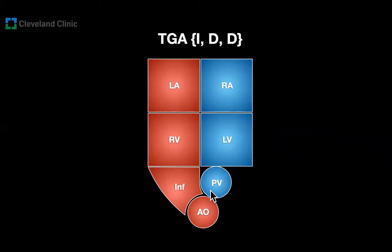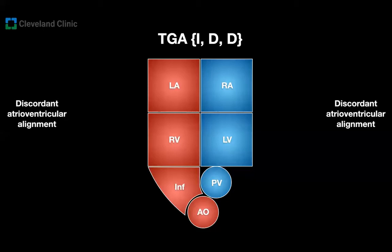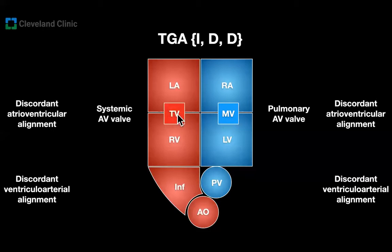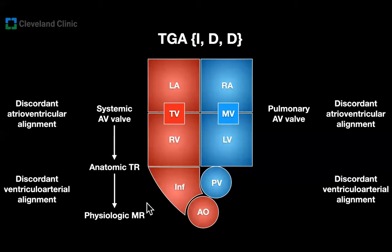This is the schematic representation of the segmental anatomy for our patient: TGA-IDD. The visceral atrial situs is inversus — that's why the morphologic left atrium is to the right. D because the ventricles are D-looped — that's why the morphologic right ventricle is in its usual expected location on the right side of the patient. And D for the great arteries, meaning they are transposed, with the aorta rightward to the pulmonary valve. Based on this TGA-IDD description, we can infer that there is discordant atrioventricular alignment and discordant ventriculo-arterial alignment. The AV valve follows the ventricle, so the mitral valve is on the left side of the patient and the tricuspid valve is on the right. The tricuspid valve is the systemic AV valve — so anatomic tricuspid regurgitation physiologically means mitral regurgitation for this patient.